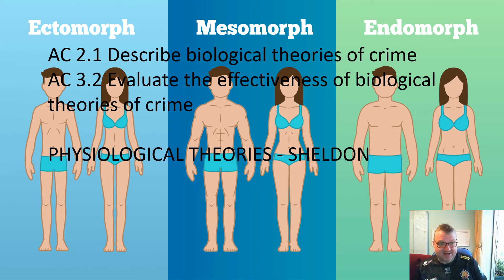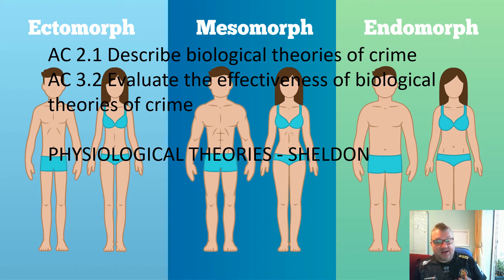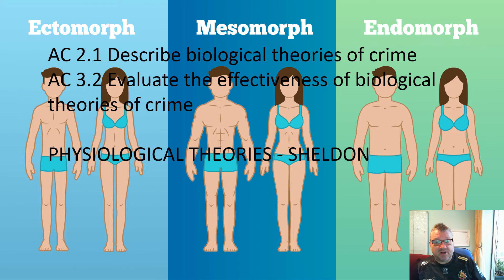We're now going to look at another physiological theory of crime. This comes under AC 2.1, describing biological theories of crime. I'm also going to bring in AC 3.2, which is to evaluate the theory, and AC 4.1, which looks at how the theory informs policy development. We've already looked at the physiological theory of Lombroso, and now we're going to look at the physiological theory of Sheldon.